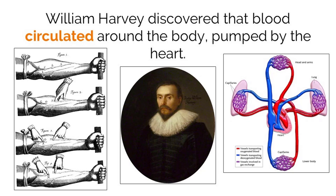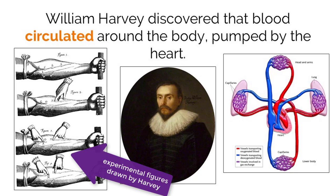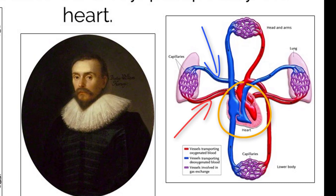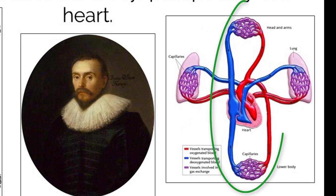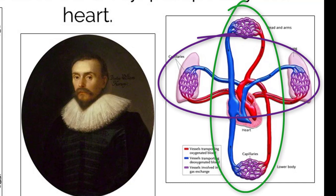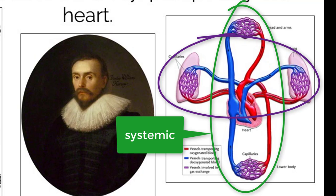Most people accepted this idea until a scientist named William Harvey developed a new hypothesis based on experiments and observations. Harvey said that arteries and veins were part of a single network with the heart acting as the pump. This network had two circulation loops: one that moved blood from the heart to the body and back, and the other that moved blood from the heart to the lungs and back.